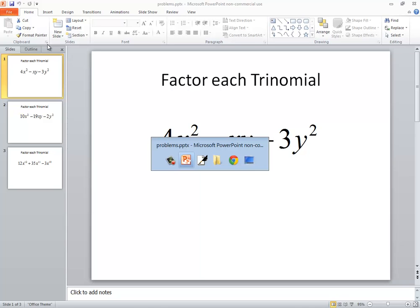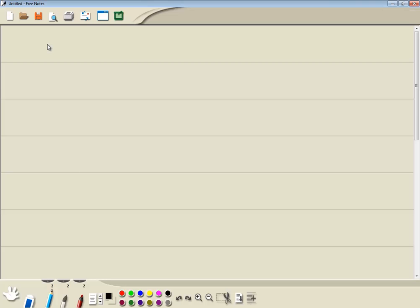Let's take a look at this problem. We've got 4x squared minus xy minus 3y squared.